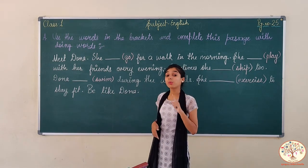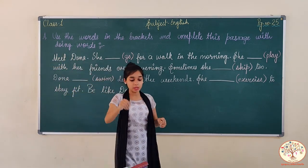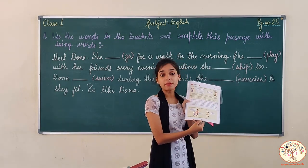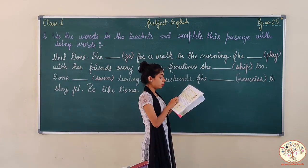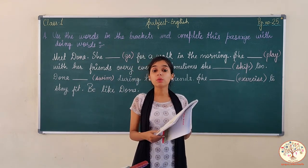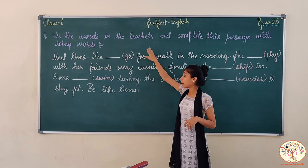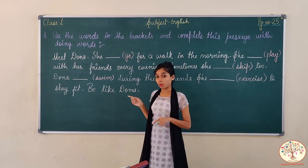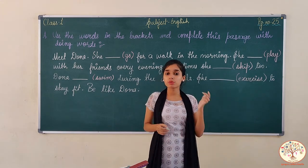Now it is time to test our learning — how much we have learnt from the previous lesson, the previous concept. Here we have an exercise, as you can see, from our own textbook, page number 25. Please take a look in your book also. The instruction is: use the words in the brackets and complete this passage with doing words. We have some words in the brackets and we have to use these words to complete this passage.